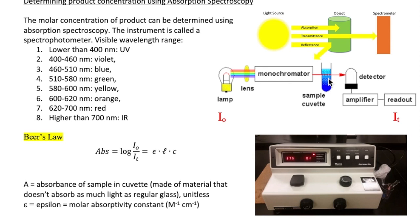The cuvette that contains the sample is then placed inside the spec and then a light is shined on the sample. The light is polychromatic, meaning that it has many different wavelengths or colors. Since typically you're only interested in the absorption of one specific wavelength,